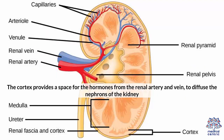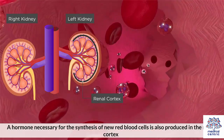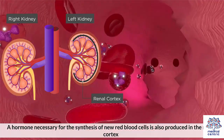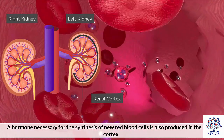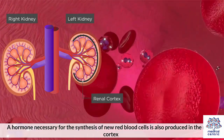The cortex provides a space for the hormones from the renal artery and vein to diffuse into the nephrons of the kidney. A hormone necessary for the synthesis of new red blood cells is also produced in the renal cortex.